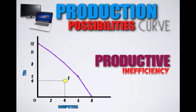Let's say Country B eliminated excessive unemployment and reached their full production possibility potential by moving from Point F to Point C on the production possibilities curve. By utilizing all of their resources, Country B still produces four computers but gains four TVs, boosting its TV output from four TVs to eight TVs. By becoming productively efficient, Country B has reached its full potential to produce.